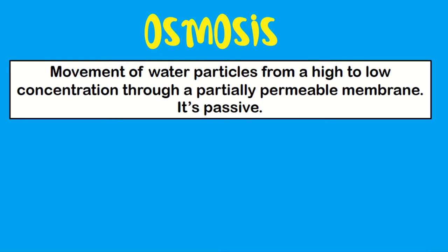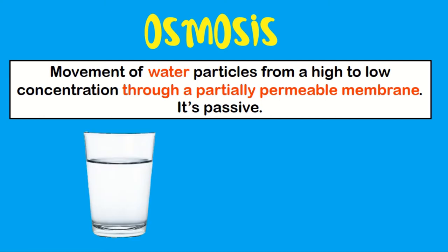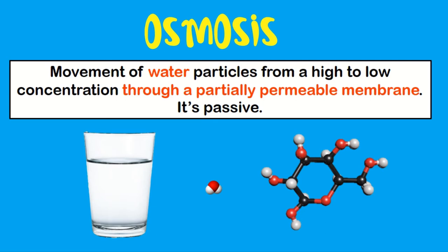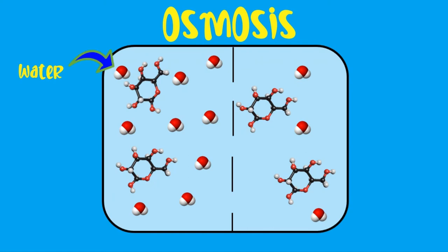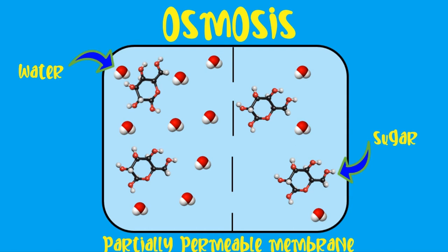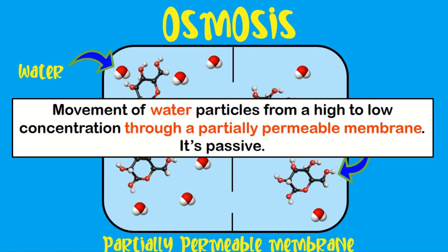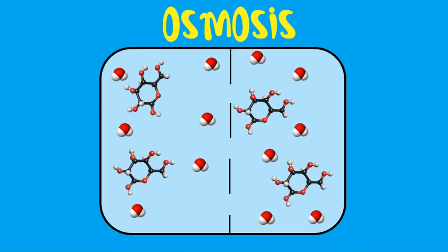Osmosis is the movement of water particles from an area of high water concentration to an area of low water concentration, through a partially permeable membrane. This is specifically about water, which is a very small molecule. A partially permeable membrane is like a gate — it lets small things like water through, but not larger molecules like sugar. On the diagram, water moves from the higher concentration on the left through the membrane to the lower concentration on the right until it's evenly spread.